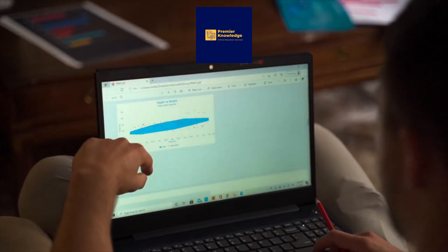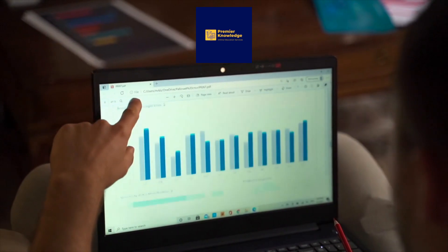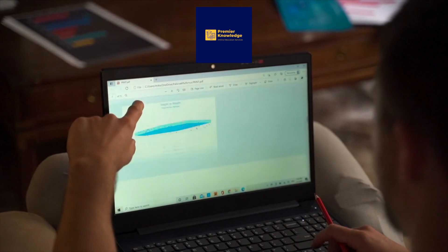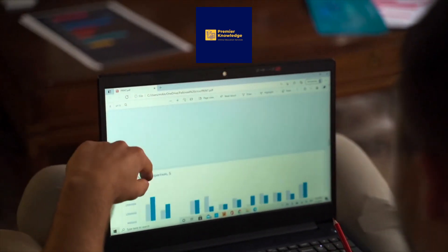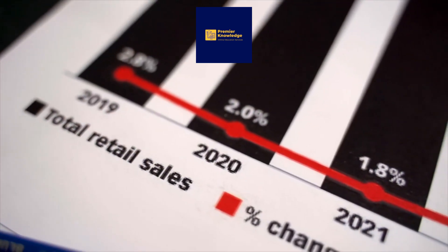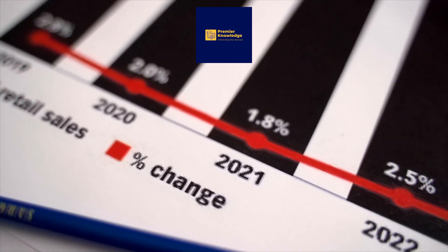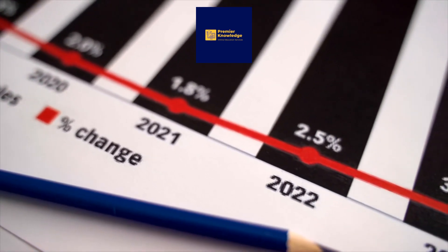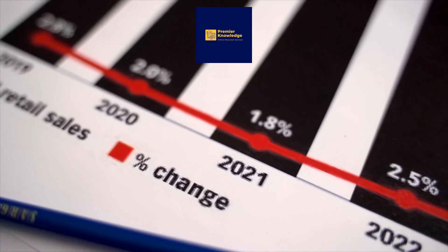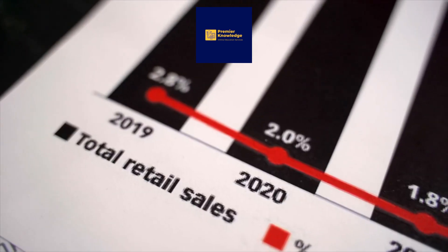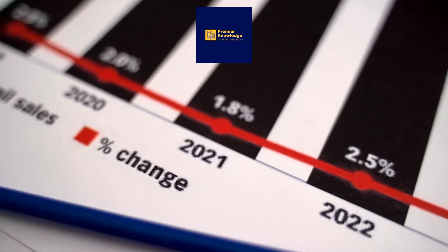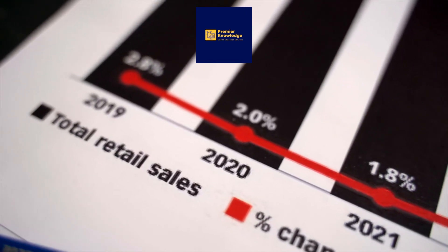Set up Google Analytics and ensure that it's tracking the relevant data on website traffic, user interactions, and conversions. Use the AI-driven features of Google Analytics to explore data trends, user demographics, and behavior patterns. Identify areas in the client's digital marketing strategy where users are dropping off or not converting as expected. Analyze the user journey through the website, including entry points, navigation paths, and exit points. Set up and track specific goals and events to measure user interactions that lead to conversions.